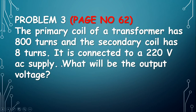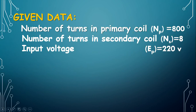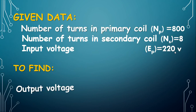Problem 3, page number 62. The primary coil of a transformer has 800 turns and the secondary coil has 8 turns. It is connected to a 220 volt AC supply. What will be the output voltage? Given data: number of turns in the primary coil NP is equal to 800, number of turns in secondary coil NS is equal to 8, input voltage EP is 220 volt. To find: output voltage.